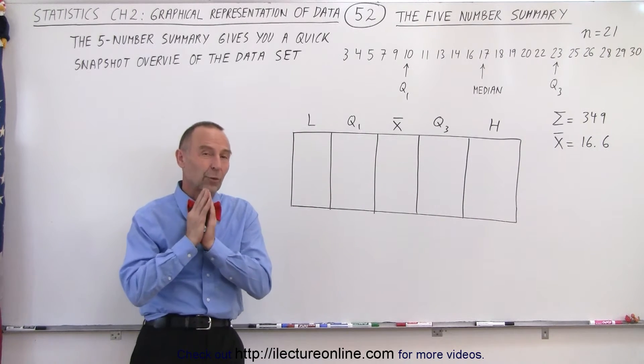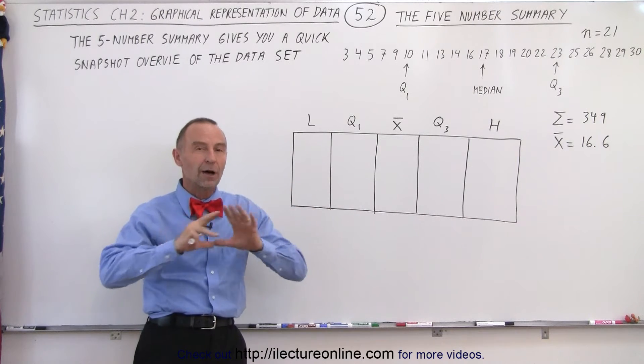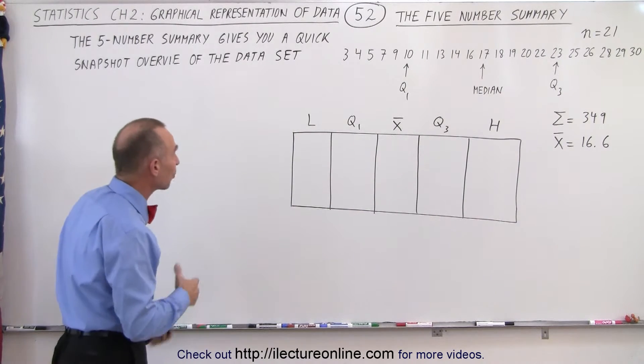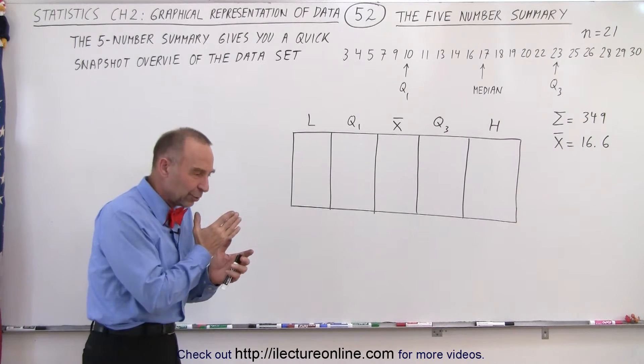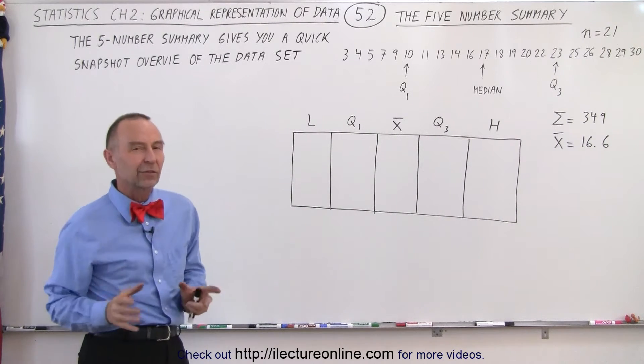Those five numbers give us a quick snapshot view of the total data set. Why we want that? Well, it saves us some time because otherwise we would have to go and do some careful analysis of all the data.